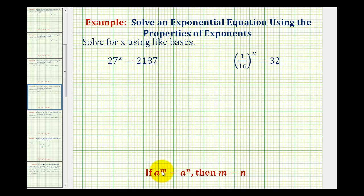In general, if a to the m is equal to a to the n, then m equals n. Again, if we have two exponential expressions equal to each other and the bases are the same, then the exponents must be equal.